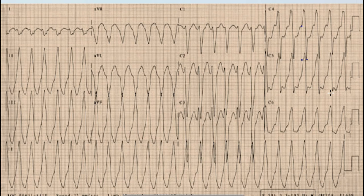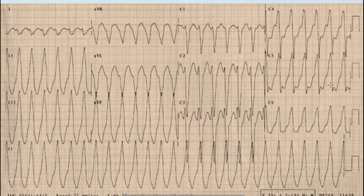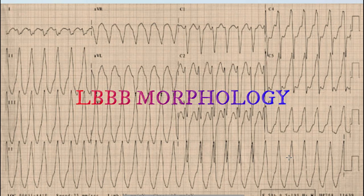So the second Brugada criterion — the distance from the beginning of the R wave to the nadir of the S wave being more than 100 milliseconds — indicates ventricular tachycardia. Additionally, the morphology of the broad QRS complex is that of left bundle branch block morphology, with a small r and deep S in V1 and a prominent monophasic R wave in lead V6, which is very typical of LBBB morphology.